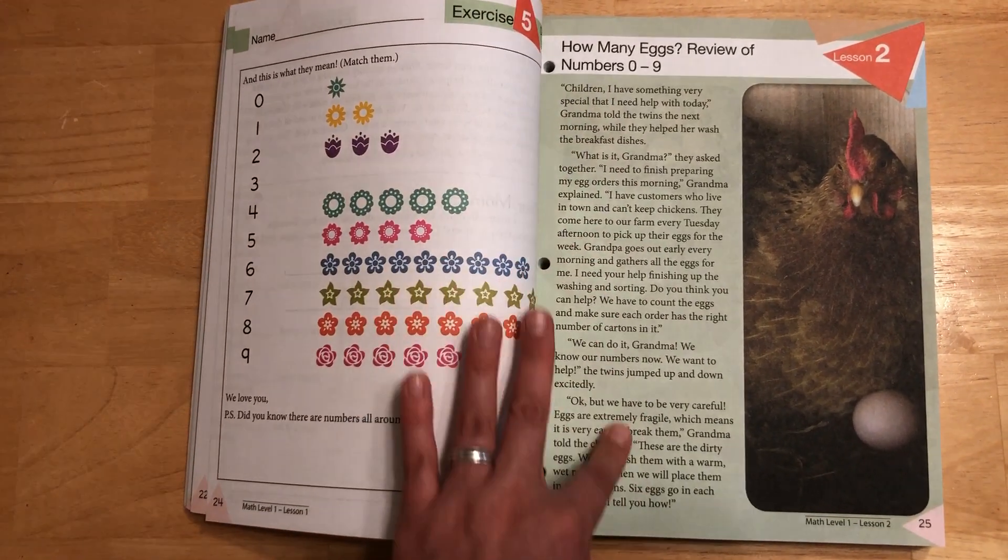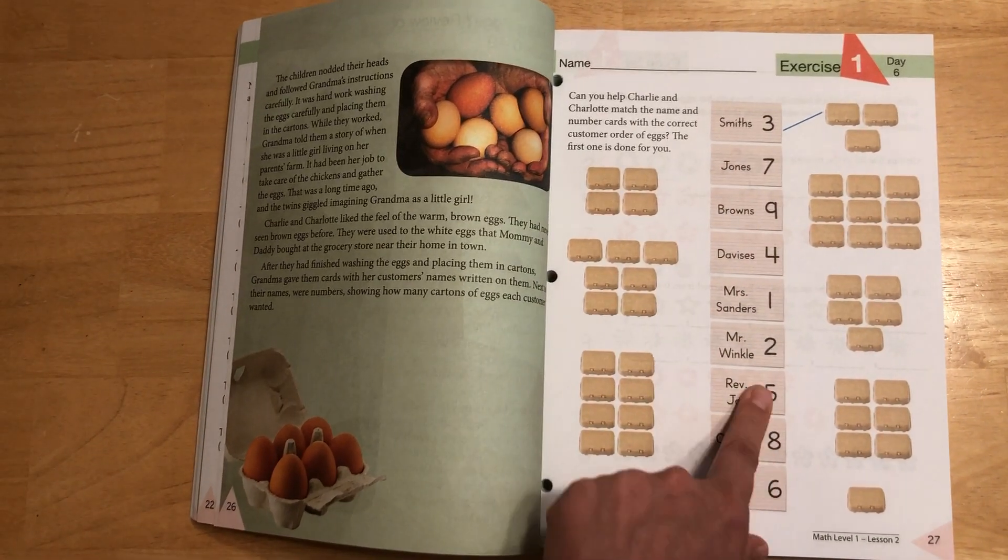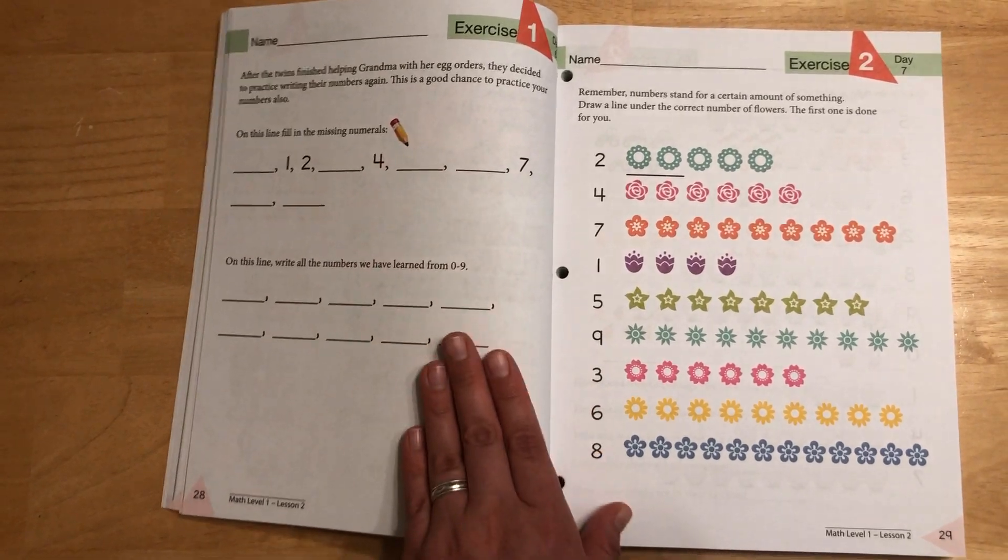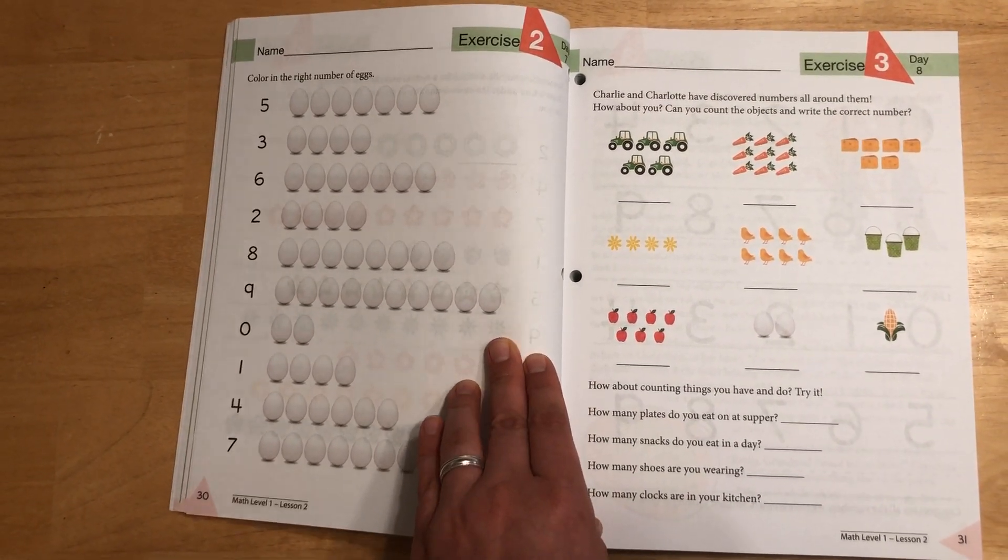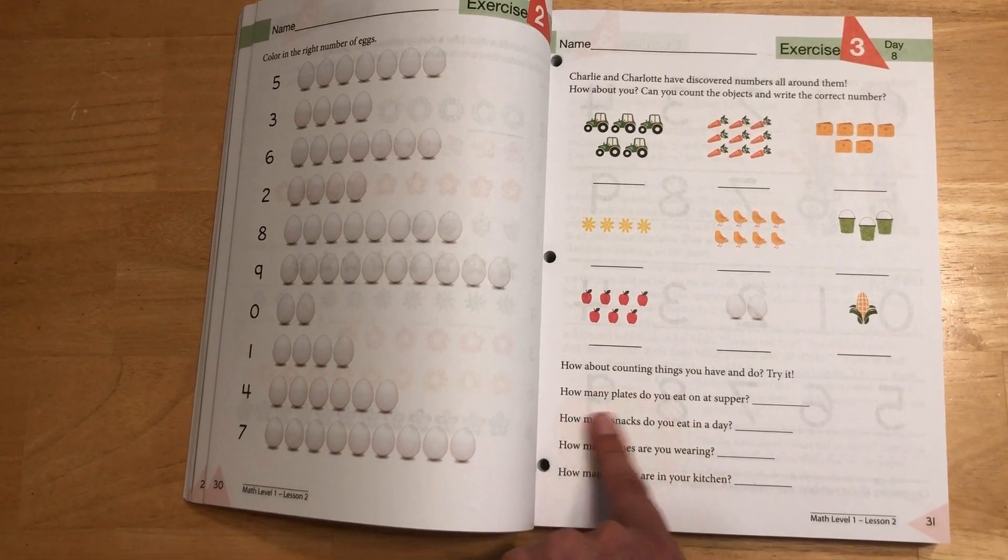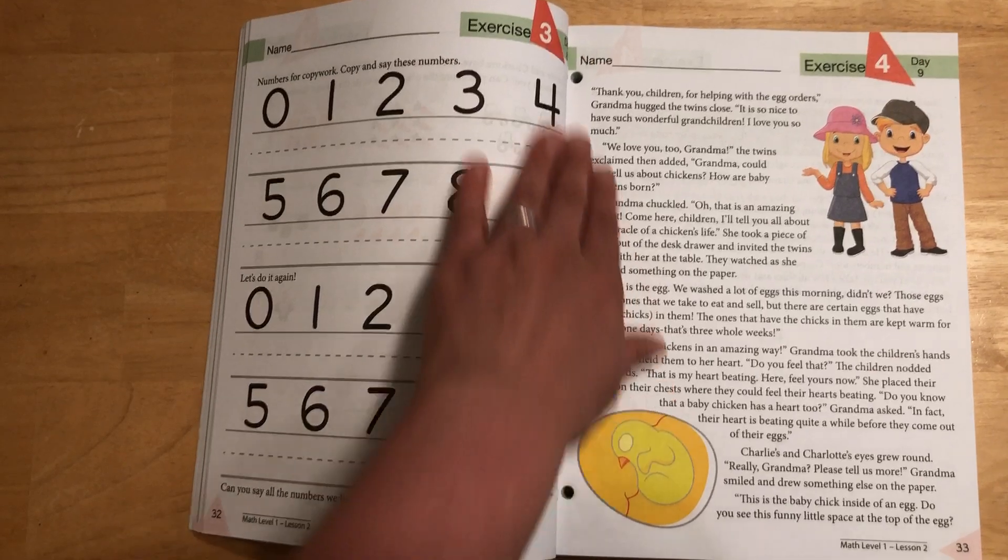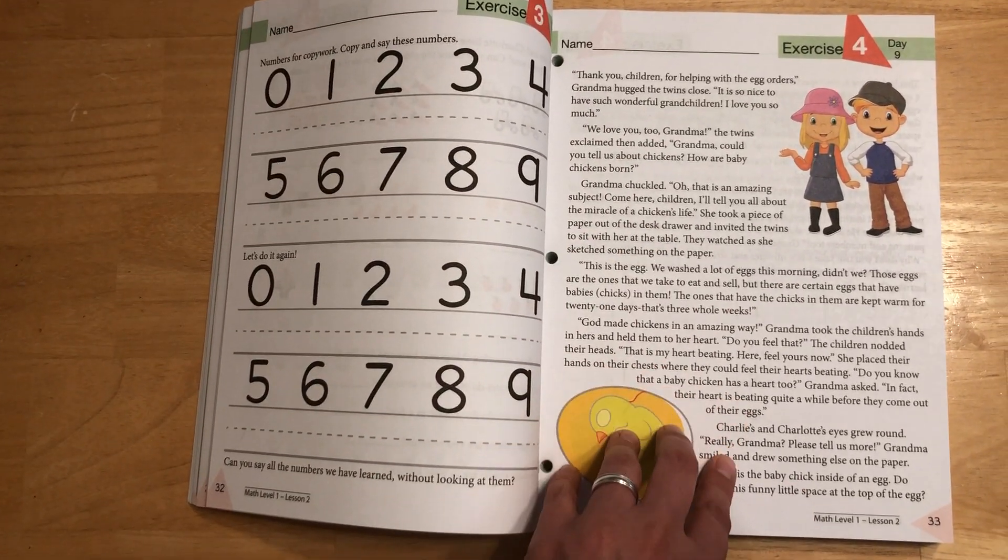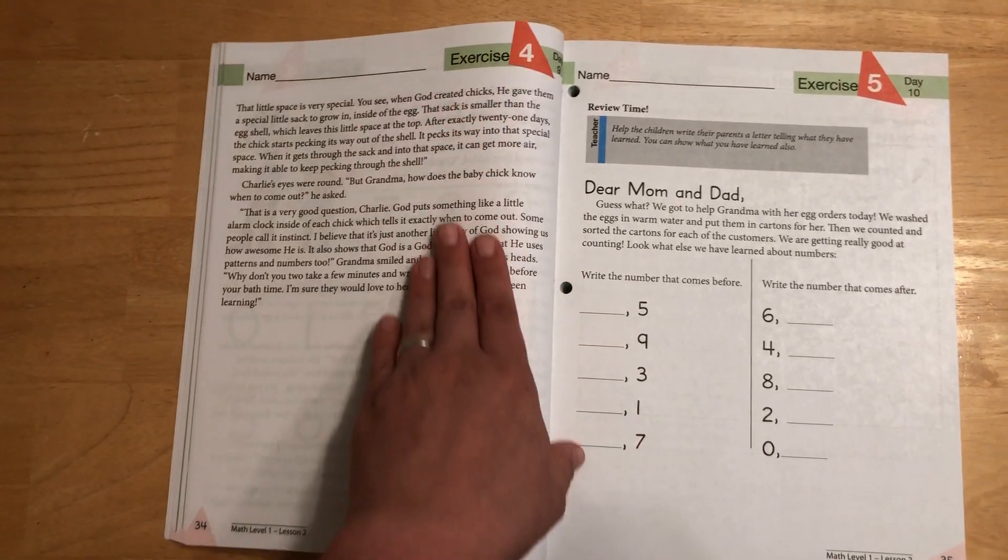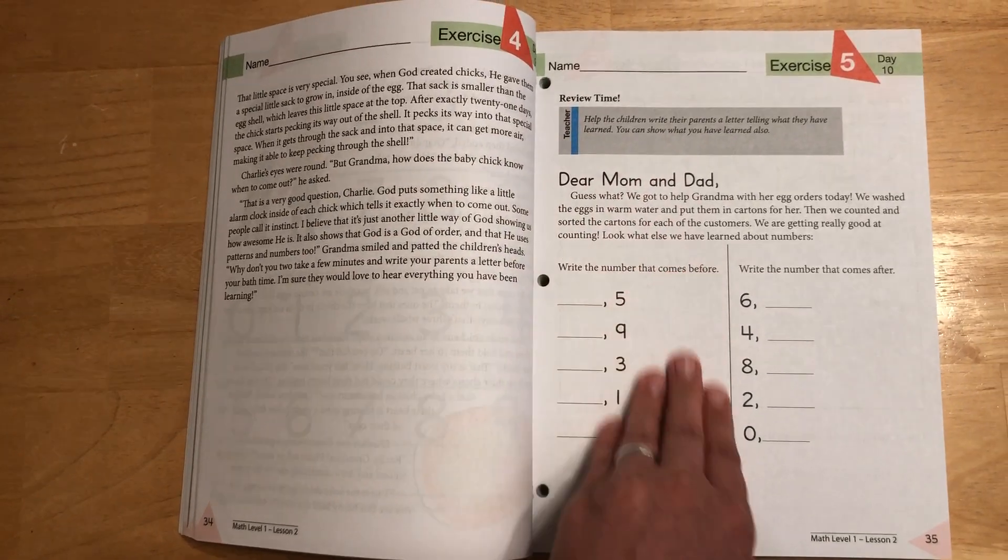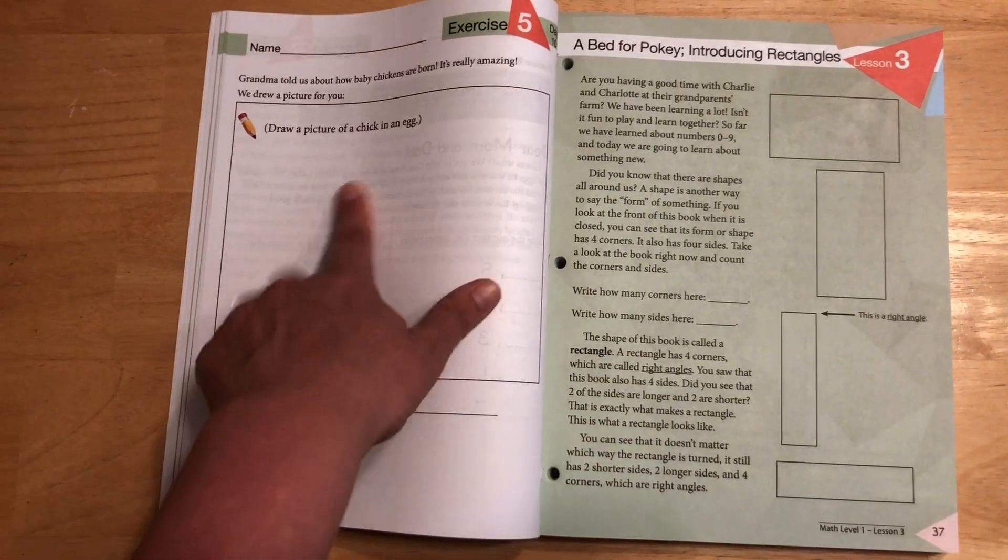Lesson two has a story about going to collect eggs and give eggs to people. We've got to match up the card with the number with how many cartons of eggs. Writing numbers, draw a line under the correct number of flowers, color in the right number of eggs, counting objects. There's some more questions: How many plates do you eat on? How many snacks do you eat in a day? So personalized to the child. Copywork, some more of a story. This is also a Christian curriculum, so it talks about how God made the chickens. Here's a letter that we're writing to mom and dad, which is the review from that lesson. Then a little art, draw picture of a chicken and an egg.